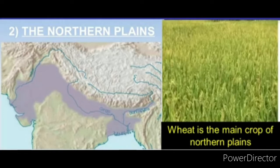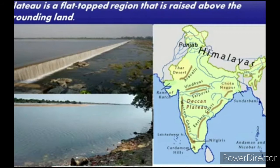The northern plains lie below the Himalayas. This area is very fertile as many rivers flow through these plains. They include the Ganga, Yamuna, Indus, Sutlej, etc.